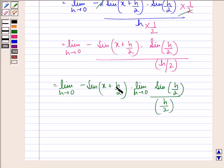Here if we put h equal to 0, we get minus sin x times 1, that is equal to minus sin x. And this is our answer to the question.